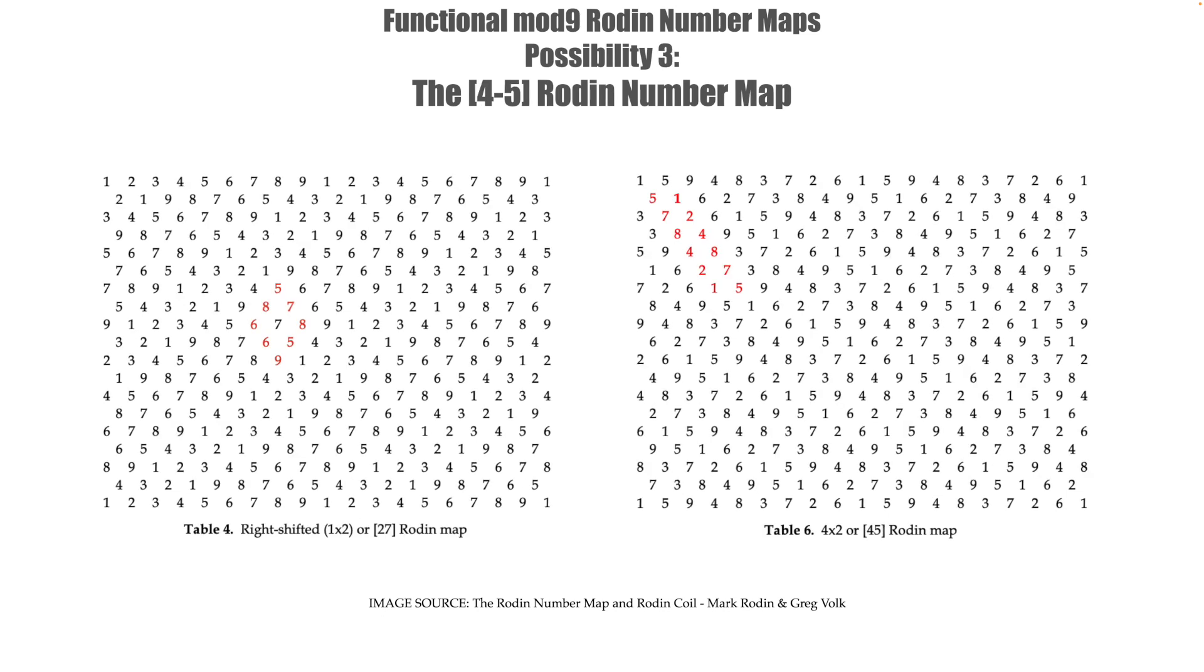Possibility three is our 4-5 or our four by two Rodin number map. Our third possibility can't be derived from shifting around the rows of the mirrored degenerate number map like the first two can. Instead Greg and Marco shifted the columns of the one by two map to obtain the third functional number map. If you want to see the method for the column shifting you can check out the paper. Once the columns of the one by two map have been shifted in a similar fashion again we obtain our third viable possibility the 4-5 or the four by two Rodin number map. In this instance the first horizontal row increases in steps of four and the first vertical column increases in steps of two.